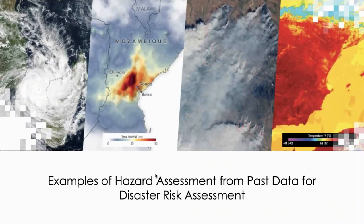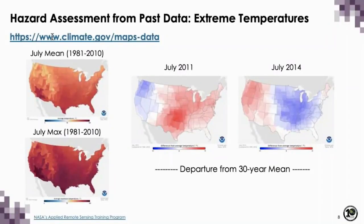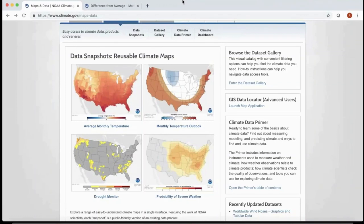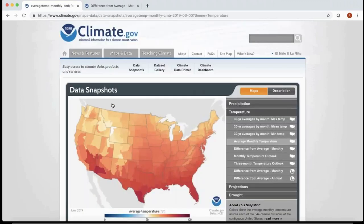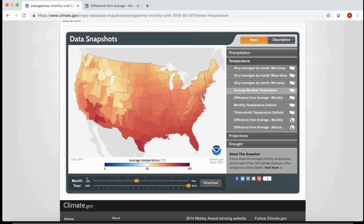We are going to see some examples of hazard assessment from past data which can be used for disaster risk assessment. Here is a website — climate.gov — that uses past data for extreme temperature hazard assessment. In this example, data used is from 1981 to 2010, and this shows the departure from mean temperature. There are data snapshots with multiple panels, including average monthly temperature for the US.